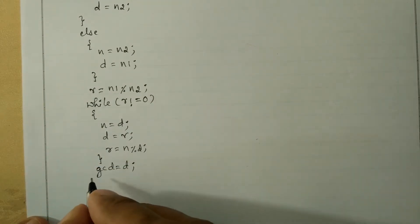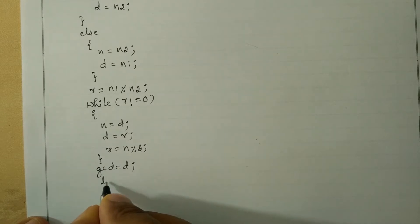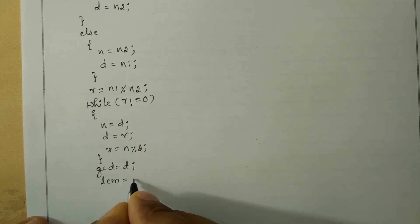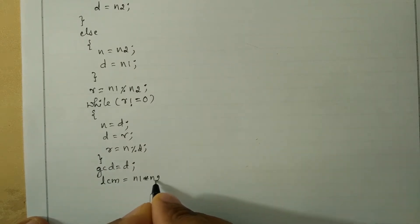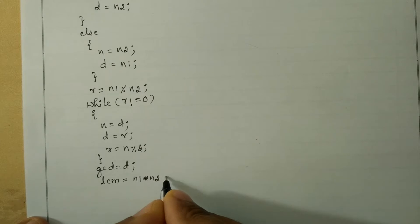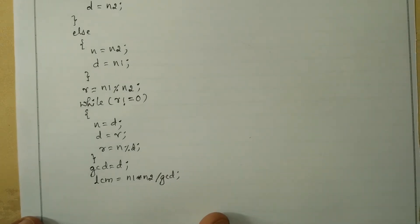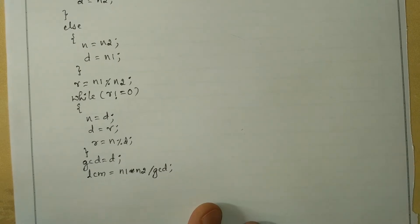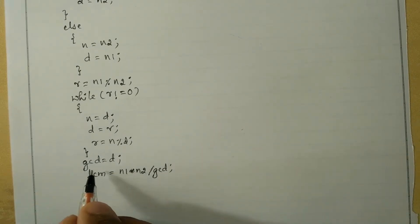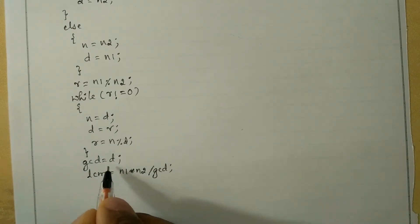After the while loop, we write gcd = d, so the denominator is equated to GCD. Then we calculate lcm = n1 * n2 / gcd. Now we have the values for both GCD and LCM.